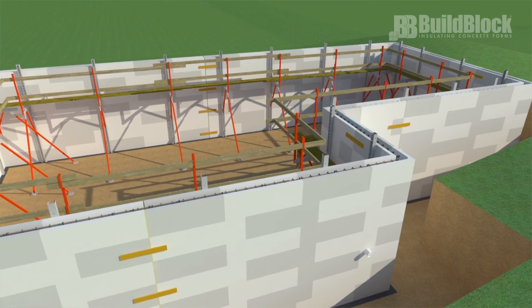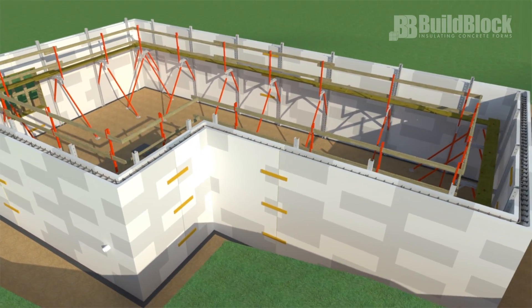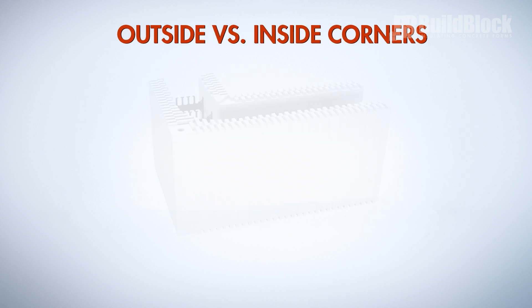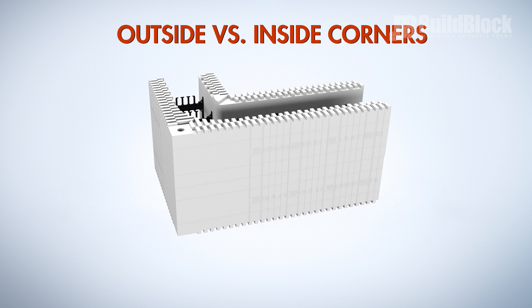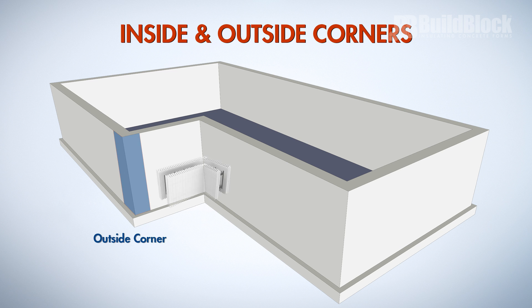The square footage of corner forms is different depending on whether it is an inside or outside corner. An inside corner has less square footage versus an outside corner because the panel lengths are different. To determine whether a corner is outside or inside, identify the long side of the block. If the longer side is on the outside of the wall, it is an outside corner. If the short side is on the outside of the wall, it is an inside corner.